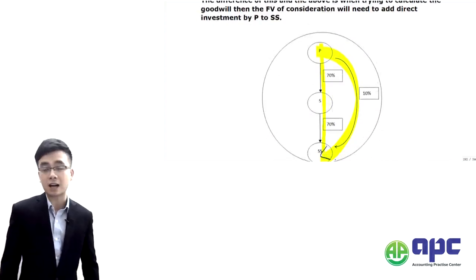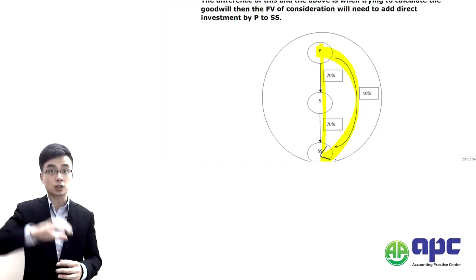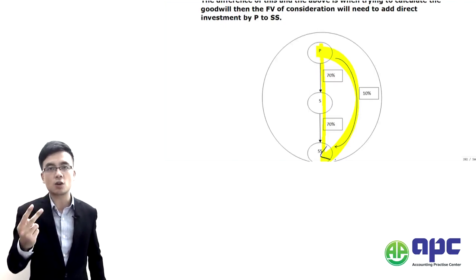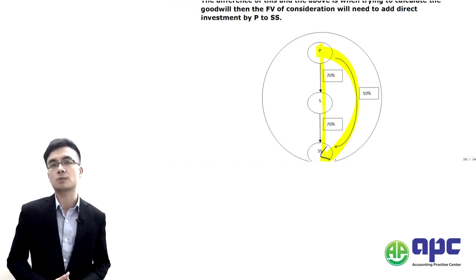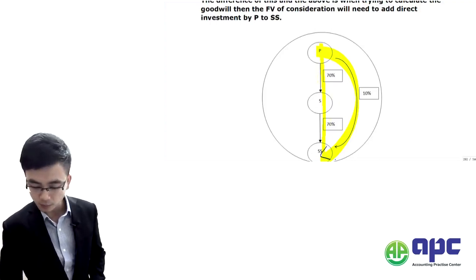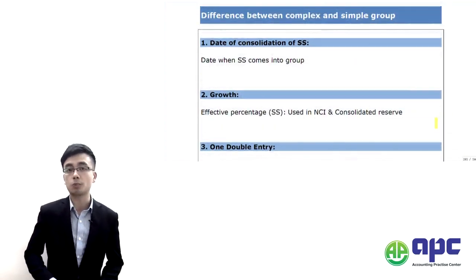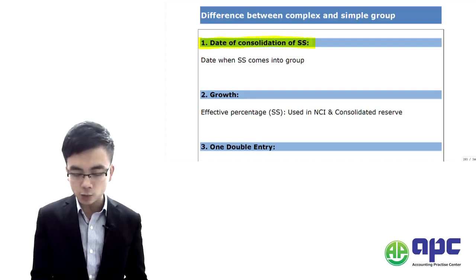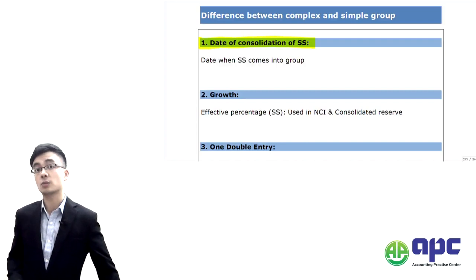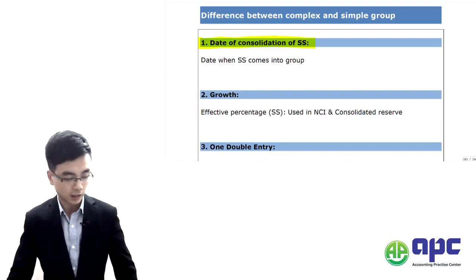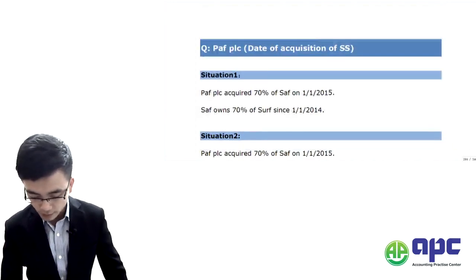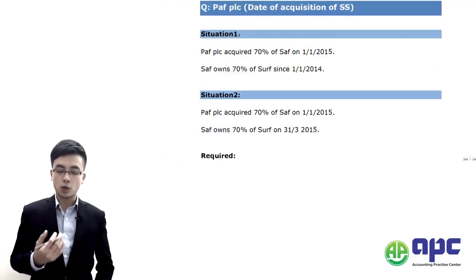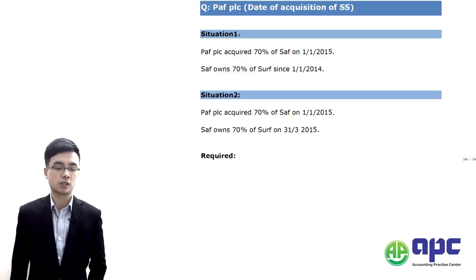There are differences between the complex and simple group. For the simple group we have the subsidiary only; for the complex group we have the sub-sub. The first difference is: when should we consolidate the sub-subsidiary into the parent's group? Let's look at a question called Path POC — situation one and two — to see when we consolidate the sub-sub.